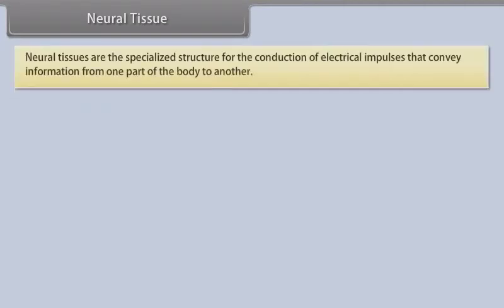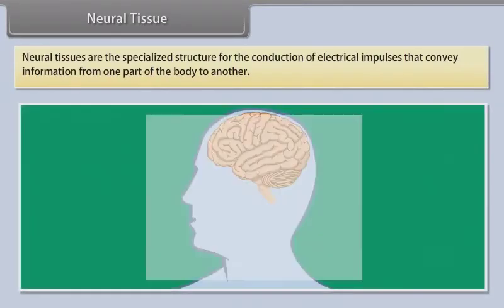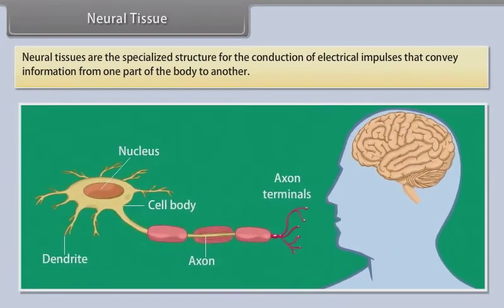Neural tissues are specialized structures for the conduction of electrical impulses that convey information from one part of the body to another.